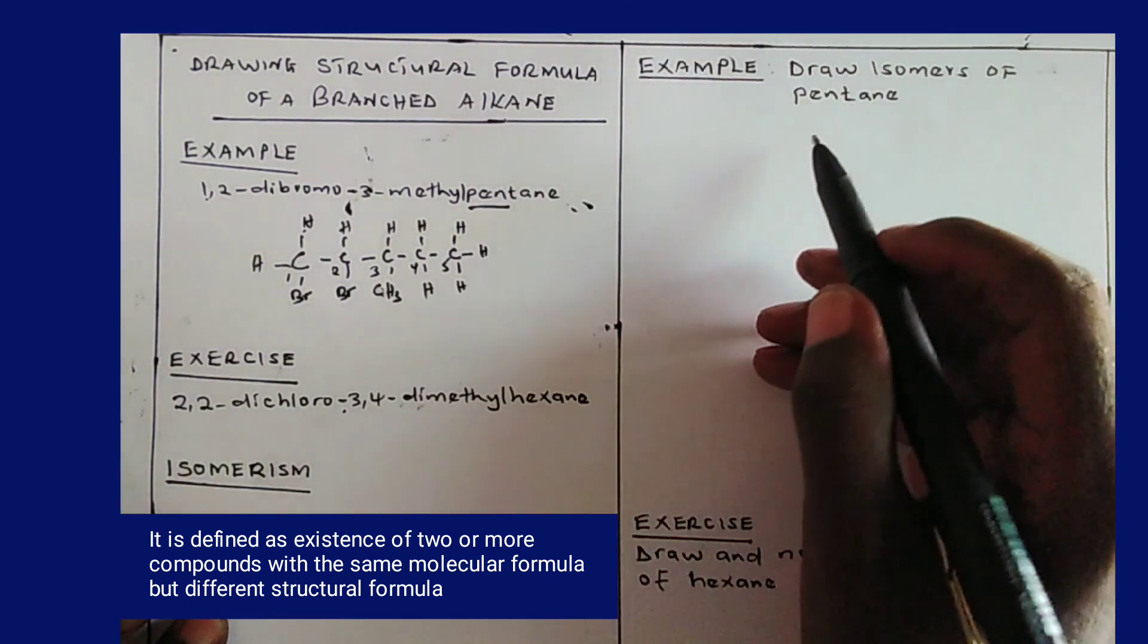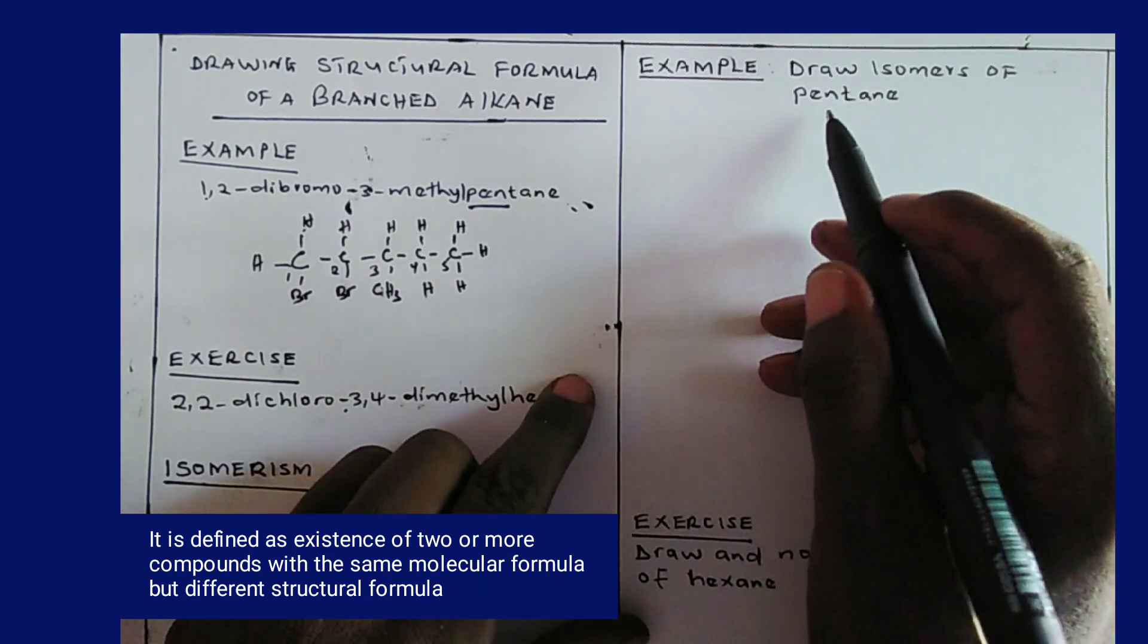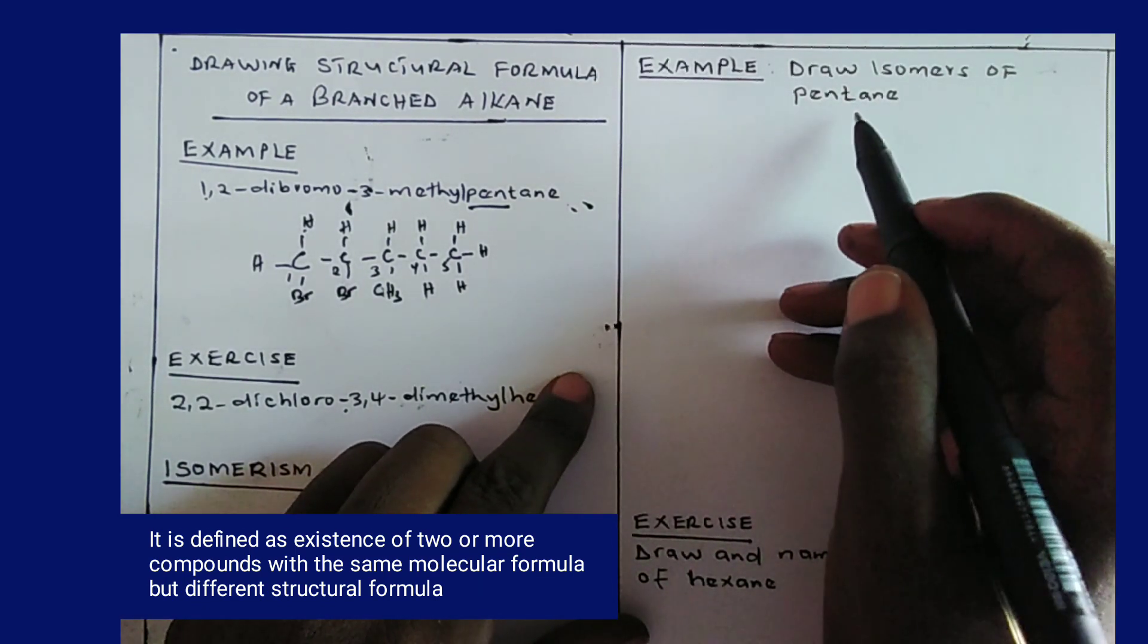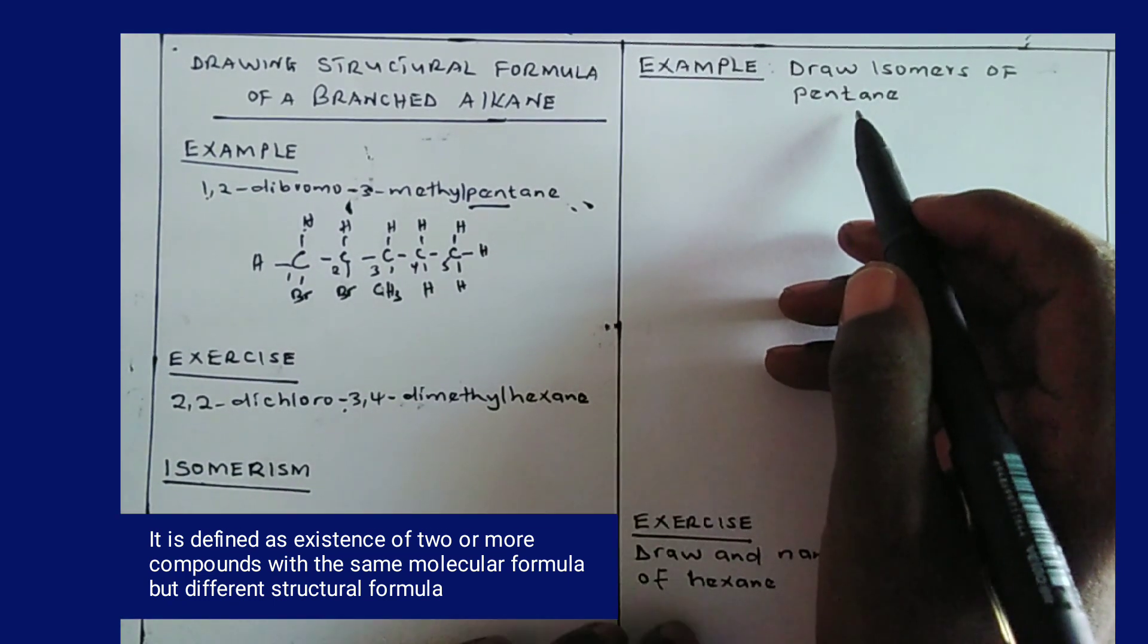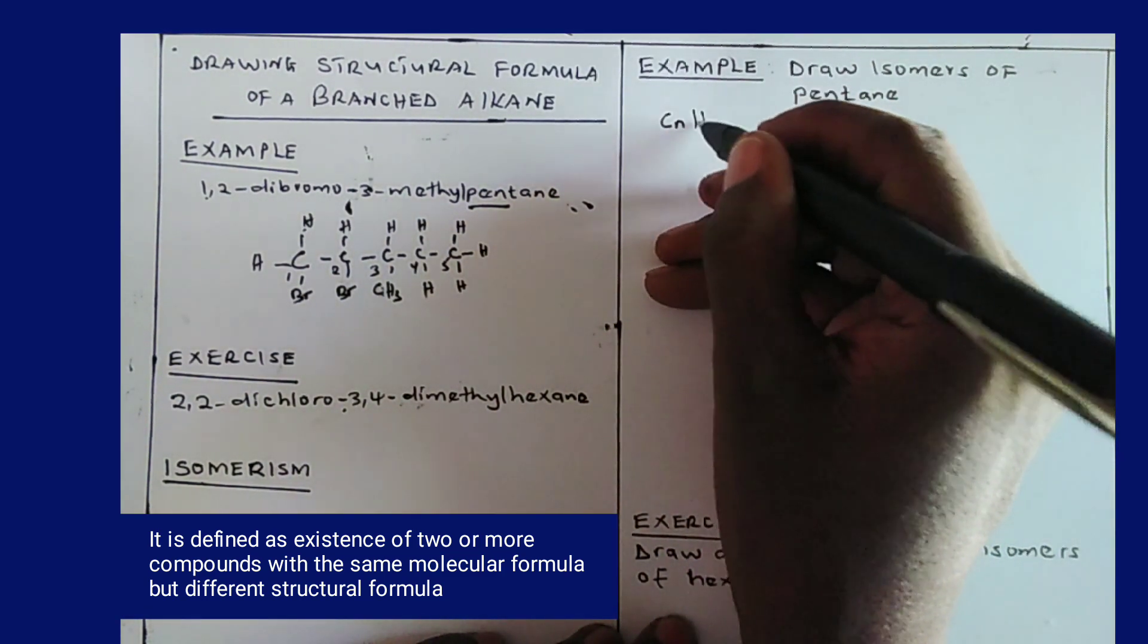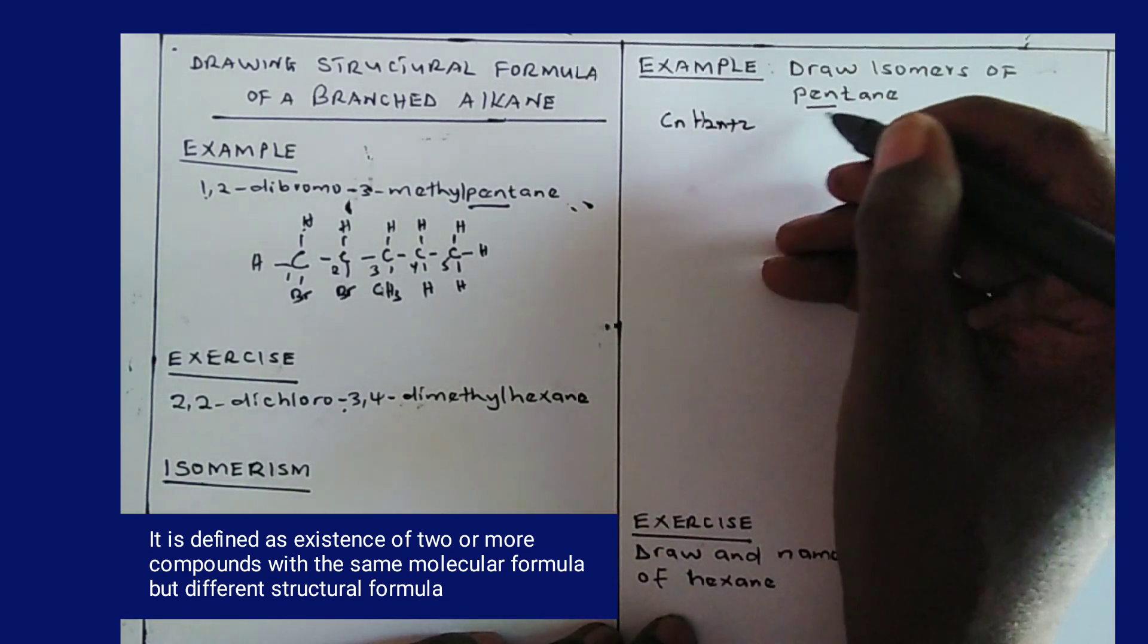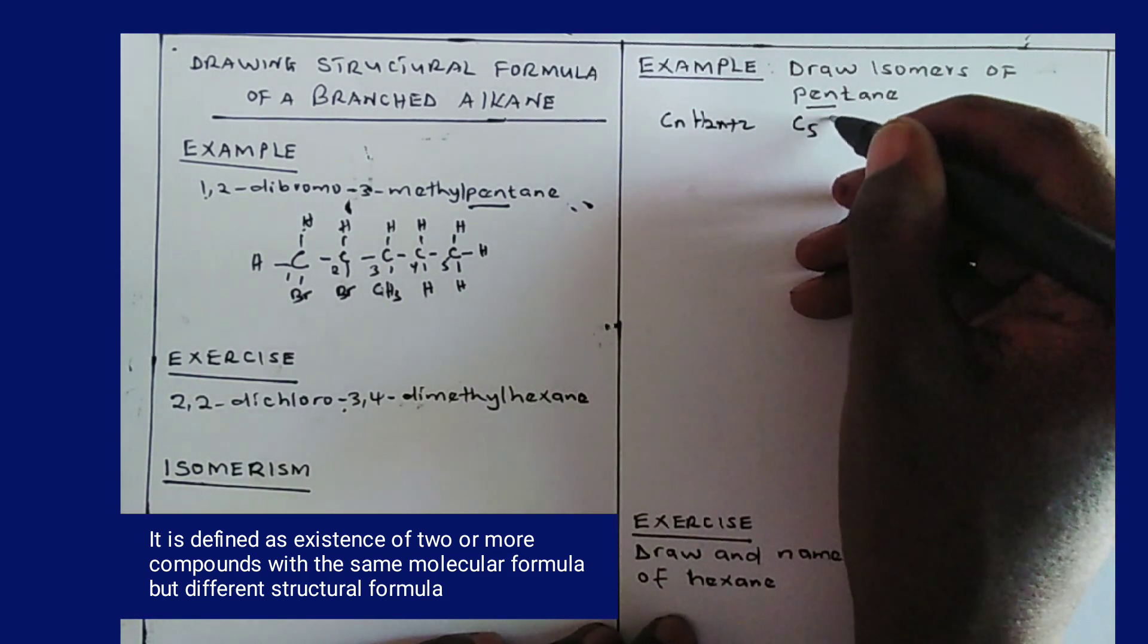Now next we want to look at how to draw isomers of an alkane. Example in this case, draw isomers of pentane. Now first of all before drawing the isomers we have to know the molecular formula of pentane. The molecular formula of pentane from the formula CnH2n plus 2, pent means 5, so we say C5, then 2 times 5 is 10 plus 2 is 12.